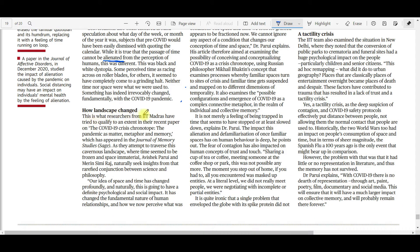This is what researchers from IIT Madras have tried to qualify to an extent in their recent paper on the COVID-19 crisis chronotope. Chronotope is a word from literature - how a particular time or era is represented in the literature of that time. Like we are in a pandemic chronotope - whatever literature will be written now, whatever movies will be made, this pandemic will form a prominent theme. The paper is titled 'The pandemic as matter, metaphor and memory.'